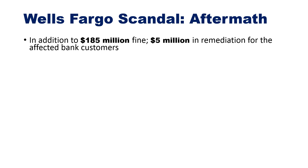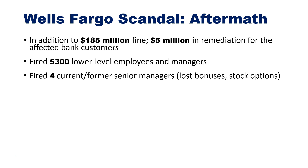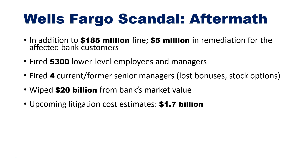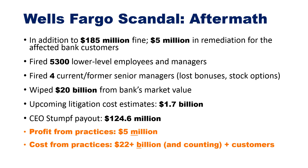The aftermath for Wells Fargo for behaving unethically: in addition to the $185 million fine, they had to pay $5 million in remediation for affected customers — wiping out the profit they made. They fired 5,300 lower-level employees and managers, and fired four current and former senior managers, who lost bonuses and stock options. This wiped $20 billion from the bank's market value. Upcoming litigation cost estimates are about $1.7 billion. CEO Stumpf actually came out relatively okay, with a $124 million payout. The profit from the practice was $5 million; the cost from these practices was $22-plus billion and counting — not including lost customers.